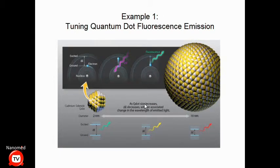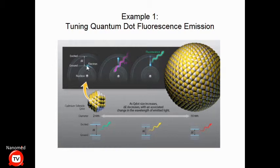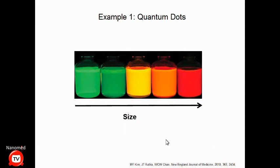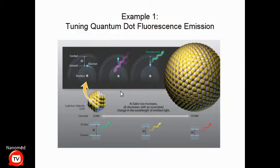With quantum dots, there is a direct correlation between fluorescence emission and particle size — a quantum size effect. When an electron goes from a ground state to an excited state, the energy difference is delta E, and that delta E corresponds to the fluorescence color of the quantum dot. As you increase the size of the quantum dot, the delta E decreases. A large delta E corresponds to blue color; a small delta E corresponds to red color. So you can make solutions that correspond to different energy differences.